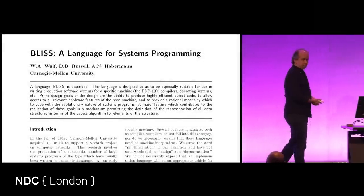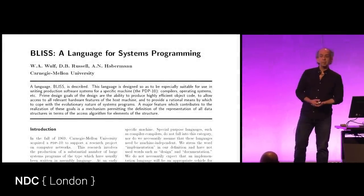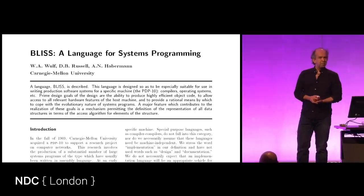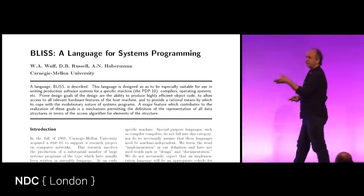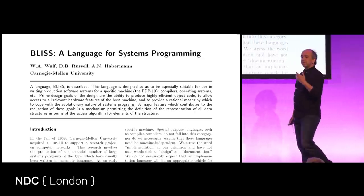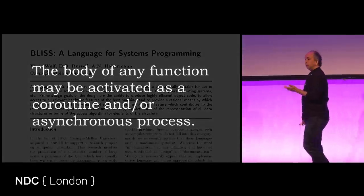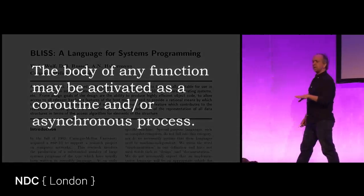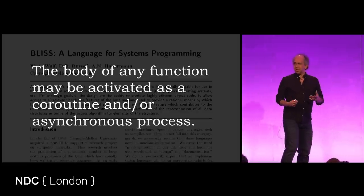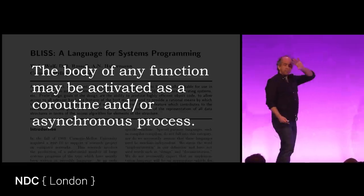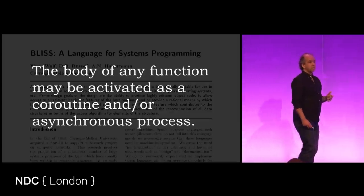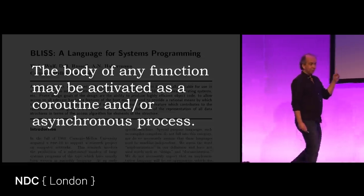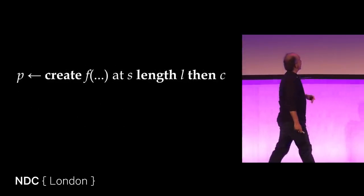We found coroutines as a standard feature in some languages. Bliss was a systems programming language in the early 70s from Bell Labs — but you might be more familiar with another systems programming language that came out of Bell Labs. Bliss ultimately lost out to C, but there are some really elegant design ideas in Bliss. It had the coroutine concept, and importantly the body of any function — you don't have to have special keywording — may be activated as a coroutine and or asynchronous process. Half a century on from that, this sounds pretty cool. Now let's look at the syntax.